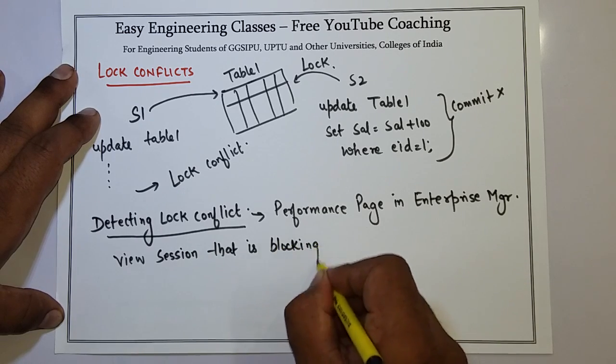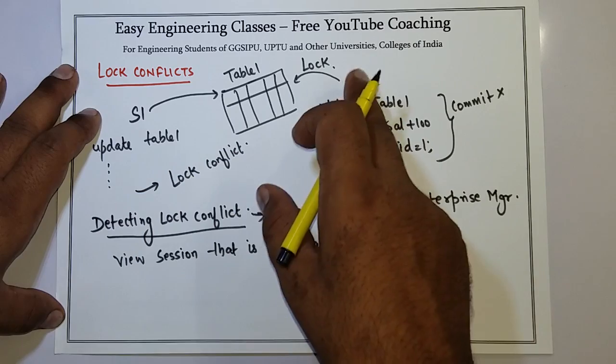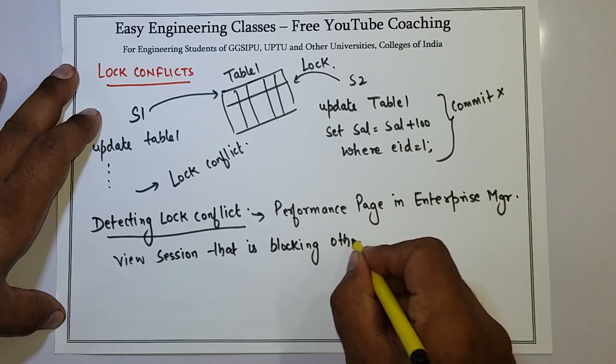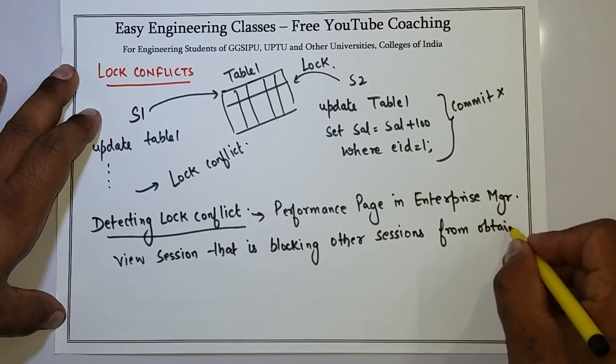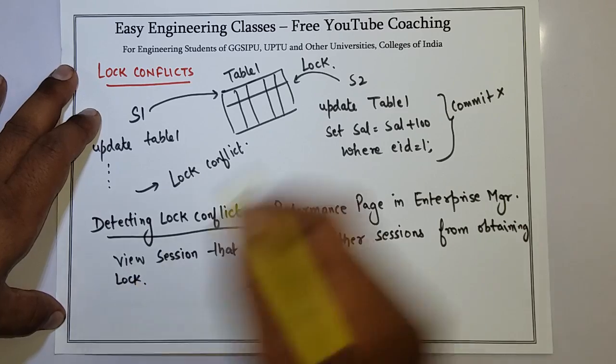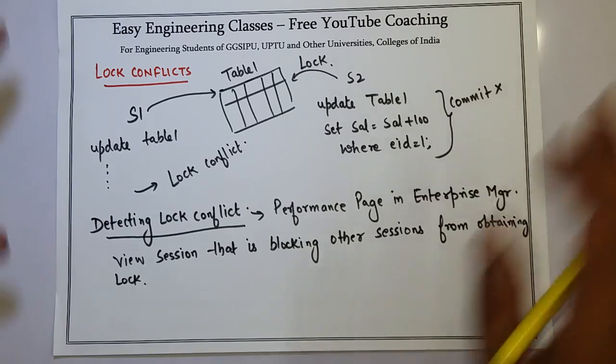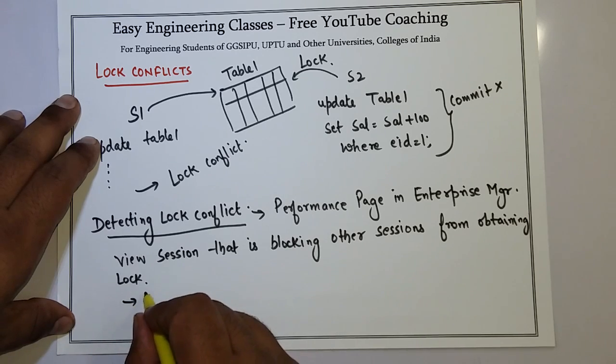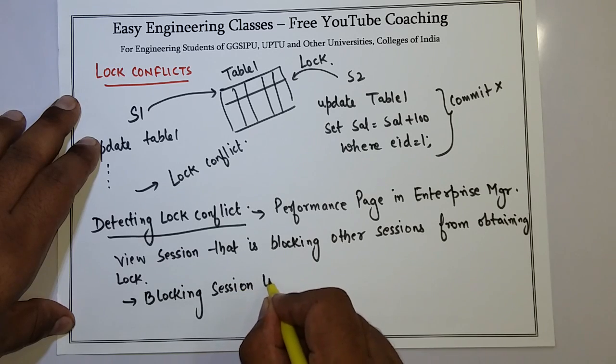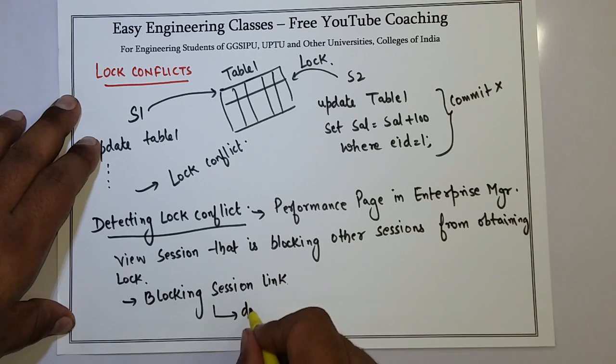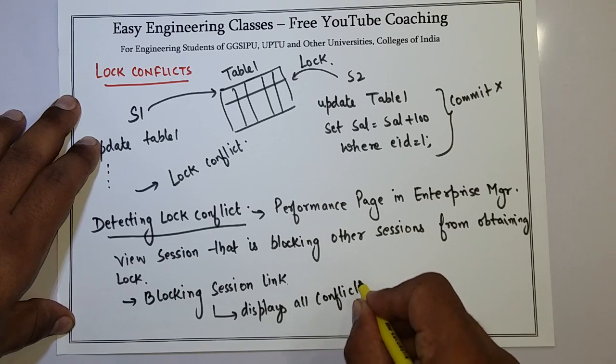So what DBA will do is, DBA will try to identify which session is preventing other sessions from acquiring lock. So in this case S2 is that session. Now the question is how a DBA can identify which session is the session which is preventing other sessions from getting a lock. So in the view sessions you can go to blocking sessions link. There is one utility which is blocking sessions link. This particular link displays all the conflicting sessions.